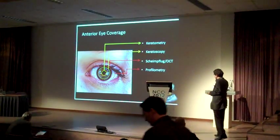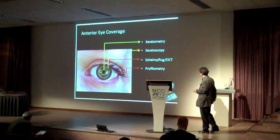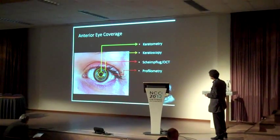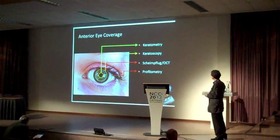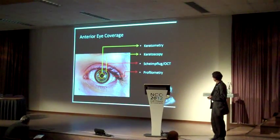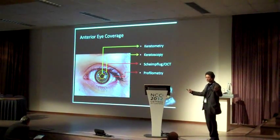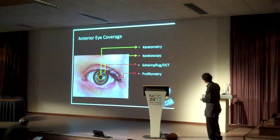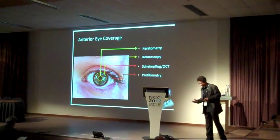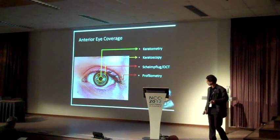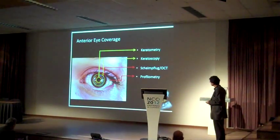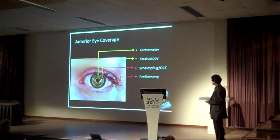When we take keratometry measurements, we know that we can derive about 3 mm. Keratoscopy, which is based essentially on the same principle as keratometry, gets us a little bit further. If we want to go even further, we have to use Scheimpflug imaging. But for contact lenses, and particularly for scleral contact lenses, what we really need is something more than that, and possibly profilometry is the answer here.